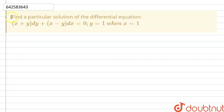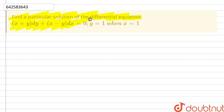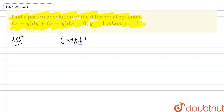Hello friends, the question is: find the particular solution of the given differential equation (x + y)dy + (x - y)dx = 0, given that y = 1 when x = 1. So we are given the differential equation which is (x + y)dy + (x - y)dx = 0.